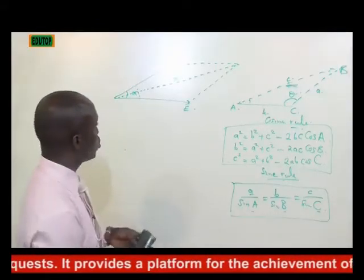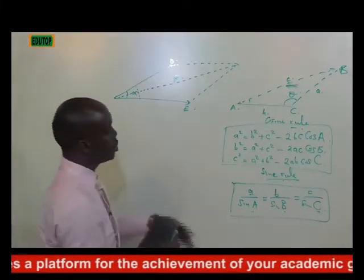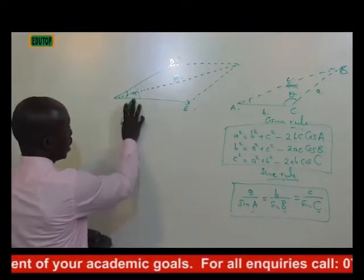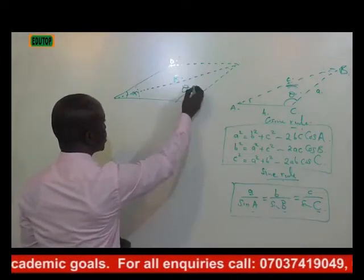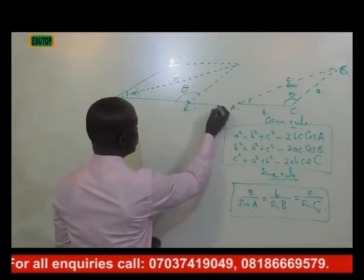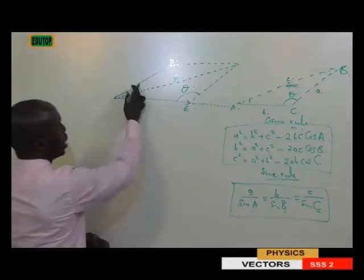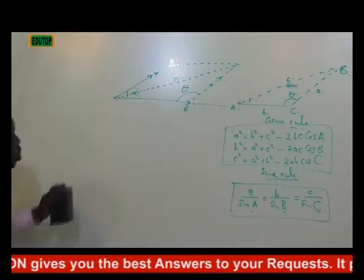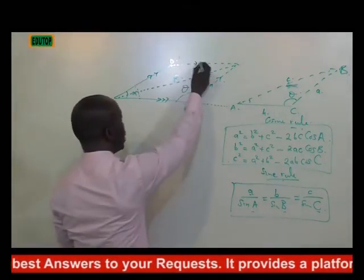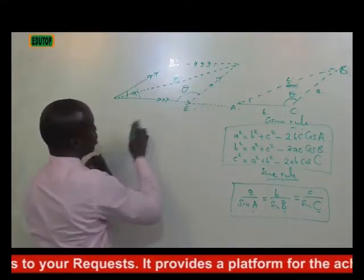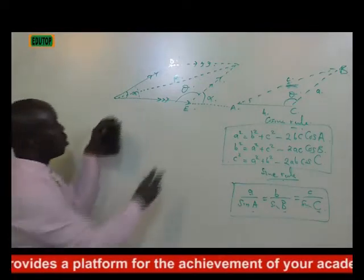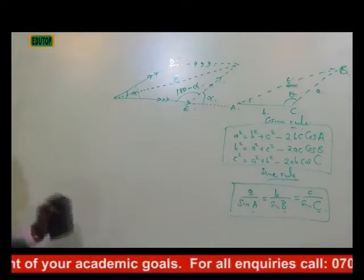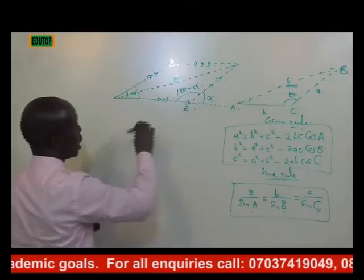How do you obtain a resultant having the knowledge of cosine rule and sine rule? Name this as your alpha. You now produce another angle here as theta. If you extend this line forward, this particular line here is parallel to this line. So if this is parallel to this, definitely this angle equals this angle. Then this angle will be 180 minus α.